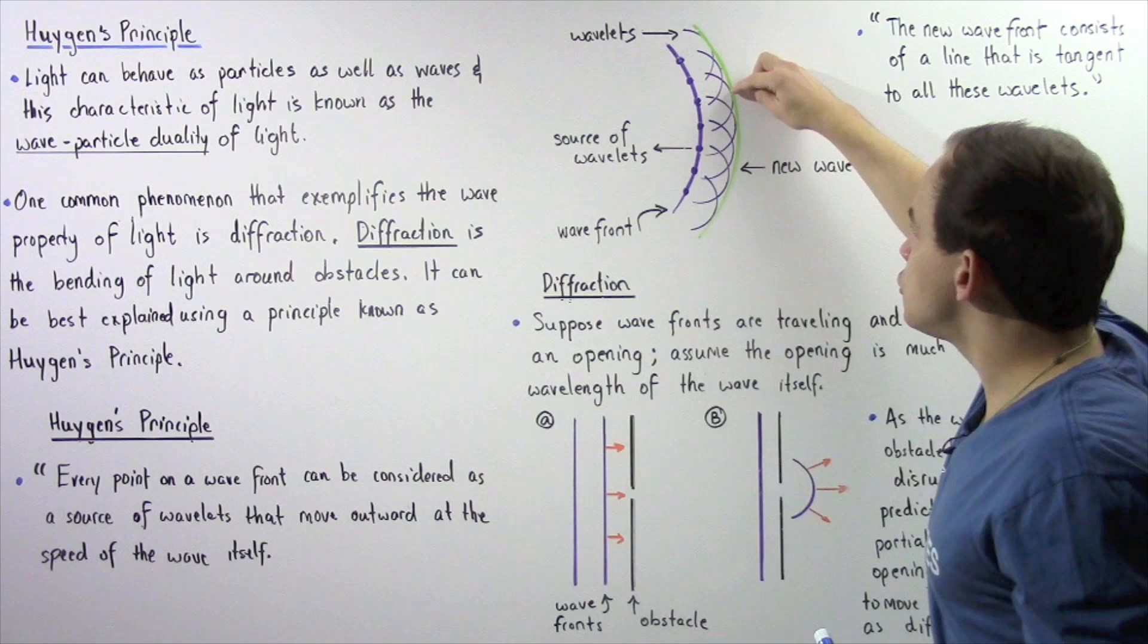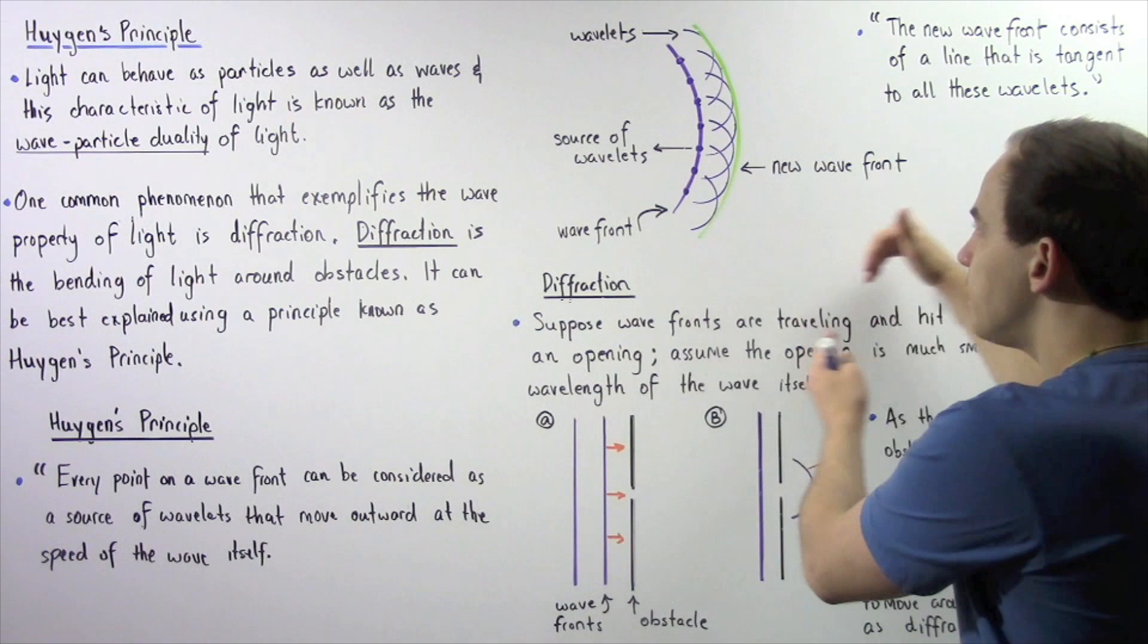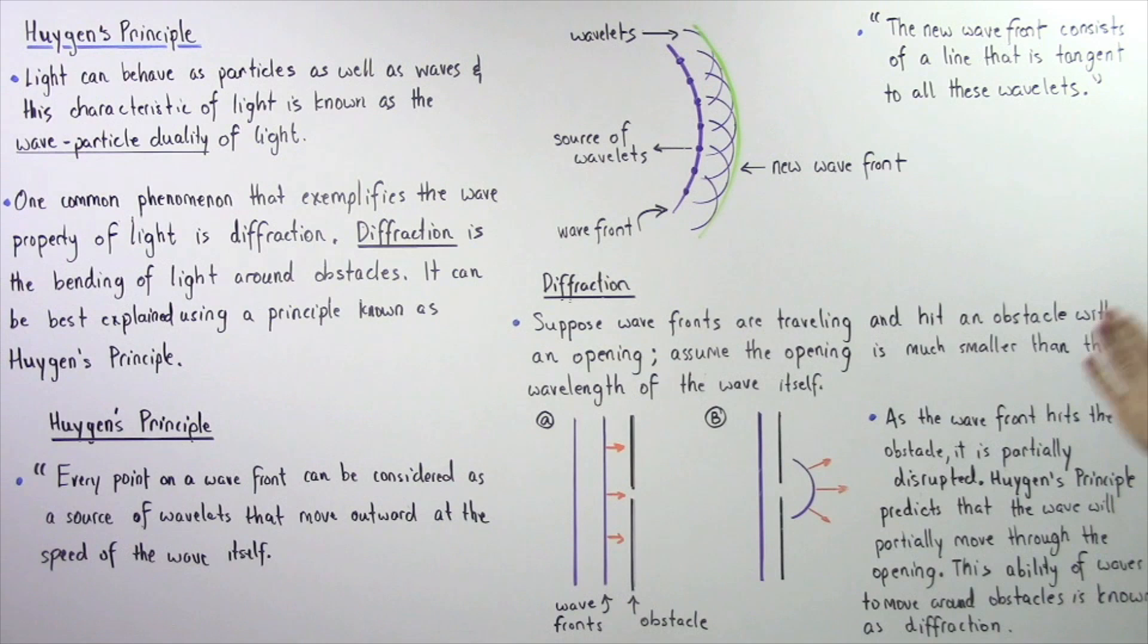Notice if we take a line and we draw the line tangent to each one of these individual wavelets, we will produce a new wave front. And that's exactly how the wave front moves. It propagates by essentially producing these wavelets which intersect to produce these new wave fronts. The new wave front consists of a line that is tangent to all these wavelets.